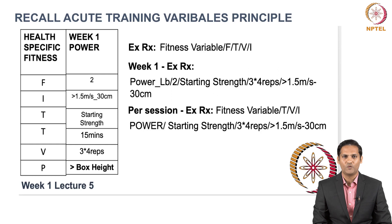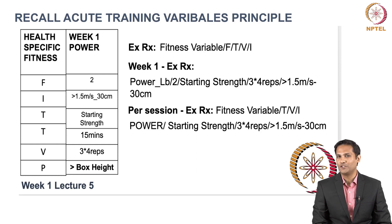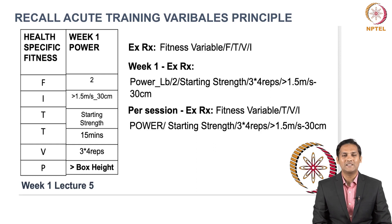As seen in the example for week 1, an exercise prescription is given for an entire week — described as power training for lower body. You are going to train 2 times a week, the type of power is starting strength, the volume is 3 sets of 4 repetitions, and the intensity is greater than 1.5 meters per second. This is an example of how you can use Acute Training Variables.